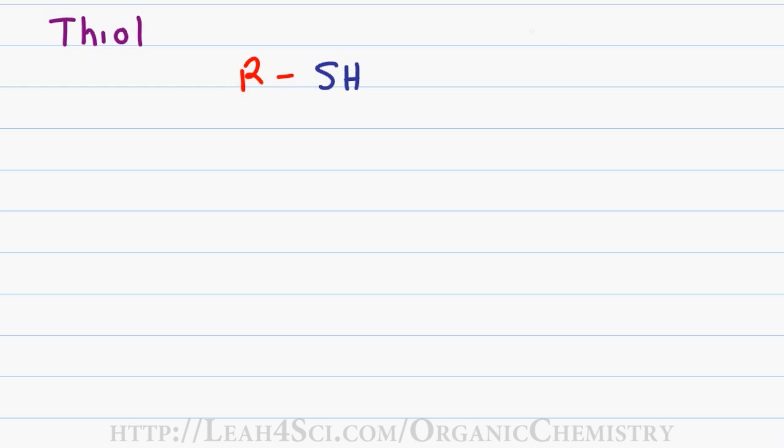If you look on the periodic table you have oxygen in the second row and sulfur directly below it on the third row. This means that oxygen and sulfur have the same valence electrons and therefore the same connectivity. Thiols, often called mercaptans, can be thought of as sulfur alcohols and will follow similar rules for naming.